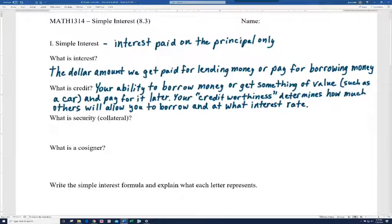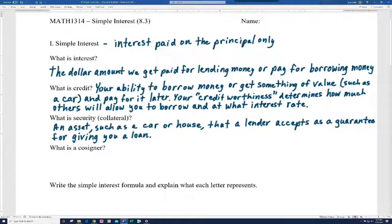What is security or collateral? It's an asset such as a car or a house that a lender accepts as a guarantee for giving you a loan. So in other words, like when you get a car loan, if you don't pay that car off, they're going to come get the car.